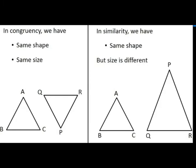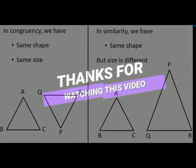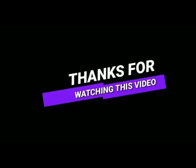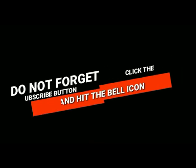Triangle ABC and triangle PQR are shown here. Triangle PQR is bigger than triangle ABC. So triangle ABC and triangle PQR have the same shape but a different size. I hope you understood this simple concept about congruency and similarity.